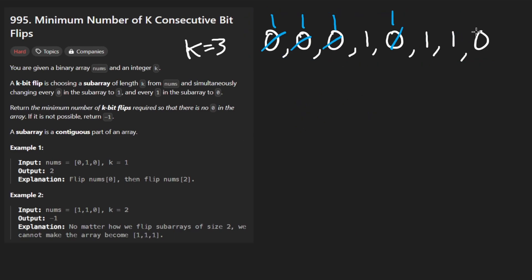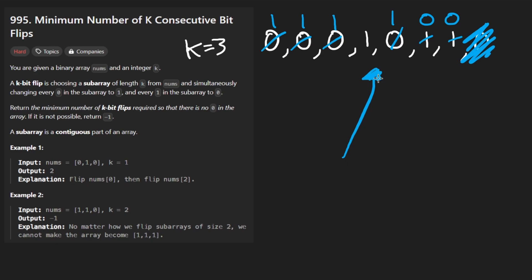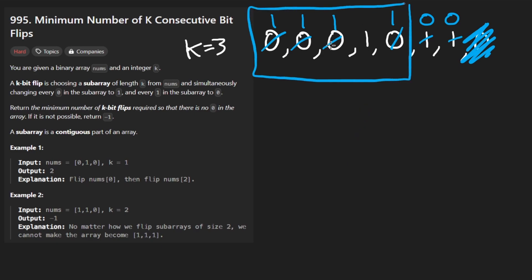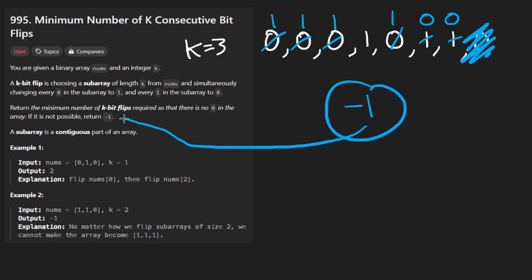What if the example was slightly different and we didn't have that last element? If there are still zeros remaining, there's nothing we can really do with that array. We can flip three bits to fix one, or flip these three to fix two, but then somewhere a one is going to turn into a zero. We can't flip a single bit — we have to flip exactly k bits. So with that example we'd return negative one, since no solution exists.